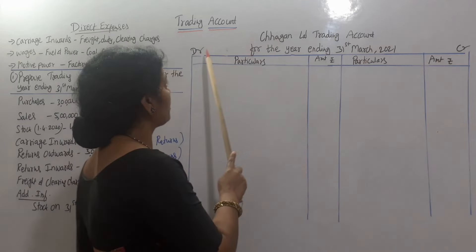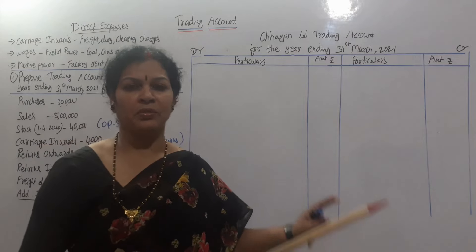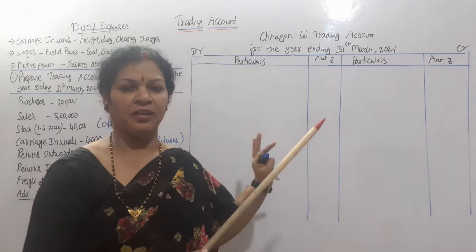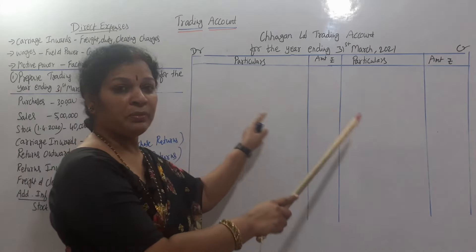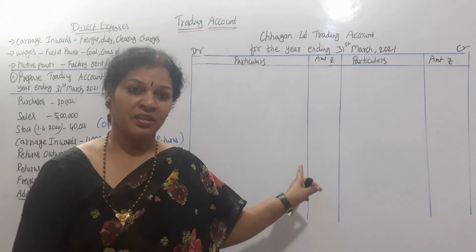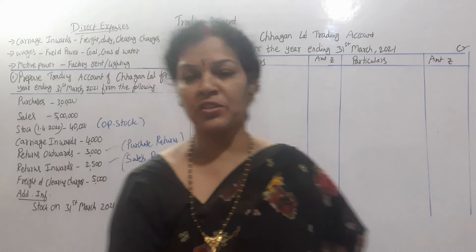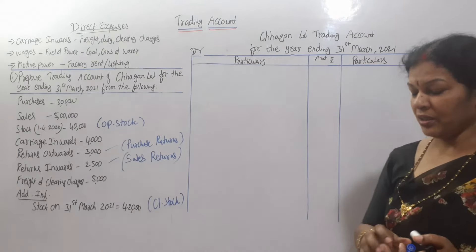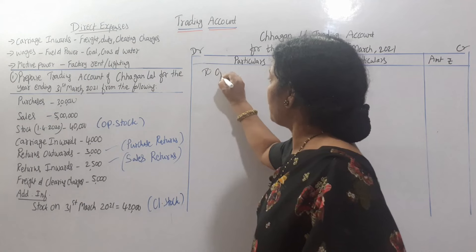If you don't follow this structure, you won't be able to solve any problem. First, you draw columns with a pencil and scale, then start the accounts. The first item on the debit side is opening stock. We start with the opening stock amount.